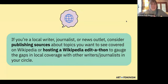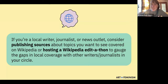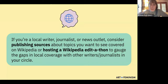The next audience this presentation is for is writers or journalists. If you're a local writer, journalist, or news outlet, you want to consider publishing sources about topics you want to see covered on Wikipedia. This is really important because of that notability clause — a subject must have at least three separate sources. You can also host a Wikipedia edit-a-thon to gauge the gaps in local coverage. There are also a couple of working wiki groups specifically for journalists with occasional events.